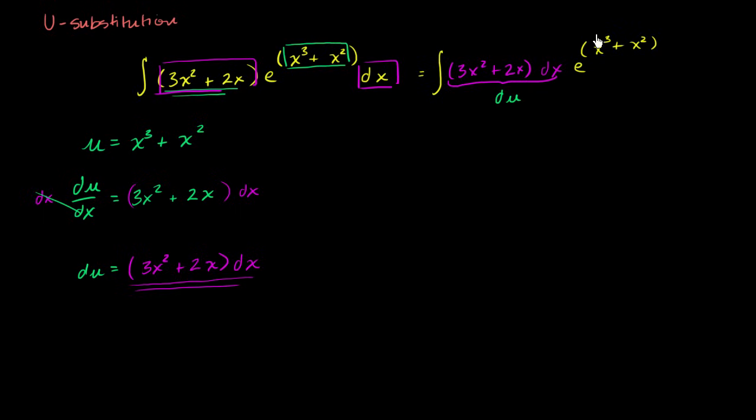And then the stuff I have up here, x to the third plus x squared, that is what I set u equal to. That is going to be equal to u. So I can rewrite my entire integral. And now you might recognize why this is going to simplify things a good bit.